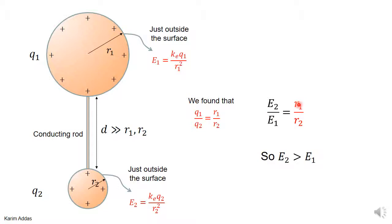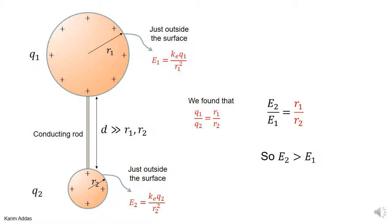So E2 over E1 turns out to be R1 over R2. E2 is the electric field just outside the sphere with the small radius, and E1 is the electric field just outside the sphere with the large radius. This ratio R1/R2 is much bigger than one, so E2 is much bigger than E1. We've proved in this simplistic model that the electric field just outside a conductor with a small radius is much bigger than outside a conductor with a larger radius — proving that the electric field at sharp edges is bigger than at parts of the conductor where the curvature is small.